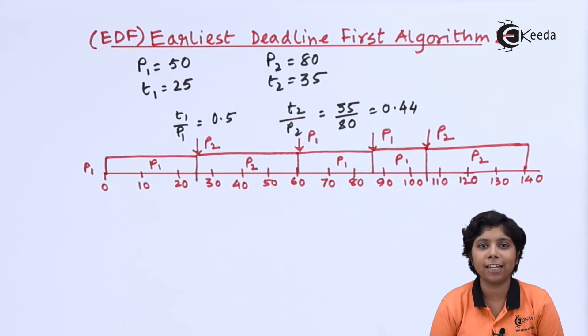In this way, theoretically, earliest deadline first algorithm becomes optimal, that it can produce 100 percent CPU utilization and the processes using this algorithm scheduling can complete their deadline. But in practice, 100 percent CPU scheduling is not possible because the cost of context switch and interrupt handling occurs in this type of scheduling.